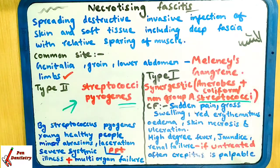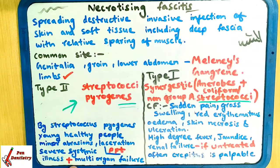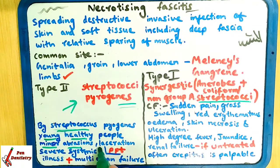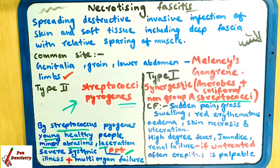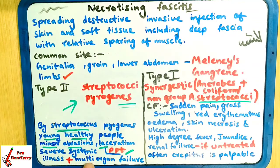Type 2 is caused by group A streptococci. The specific feature of Type 2 is that it can occur following a minor abrasion or laceration — a precipitating factor. The patient presents with severe systemic illness with multiple organ failure, and it can lead to streptococcal toxic shock syndrome.